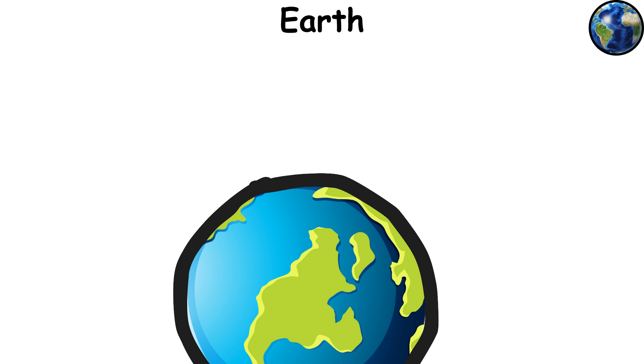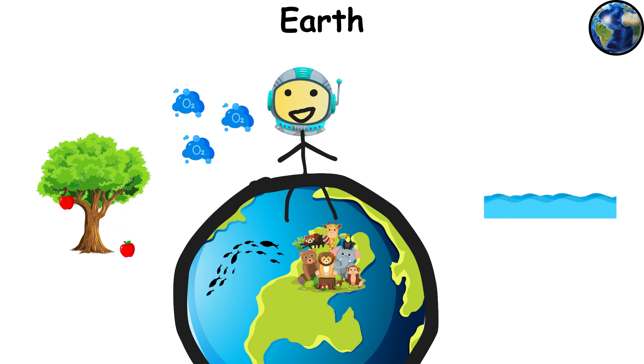From lush forests to icy poles, Earth has everything, including life. Yep, we're special like that. Earth's got just the right mix of everything, water, oxygen, gravity, to support millions of species, including us. Enjoy it while it lasts, though. Space is a rough neighborhood.